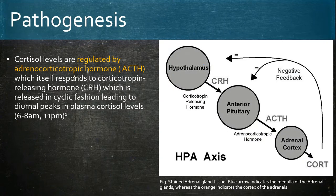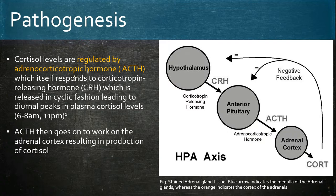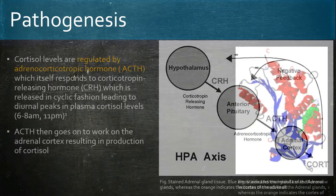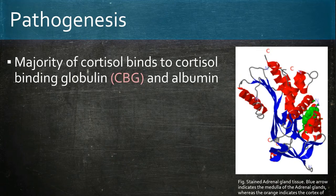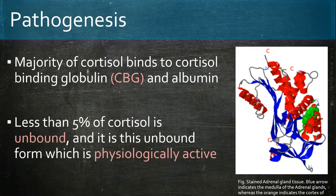Once ACTH is released, it acts on the adrenal cortex, resulting in the production and release of cortisol. Most of the cortisol produced binds to cortisol-binding globulin and albumin. 5% however remains free, and this is the unbound cortisol which is physiologically active.